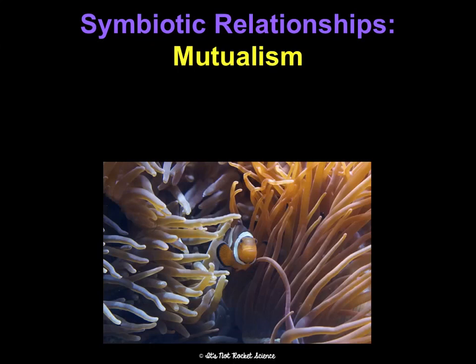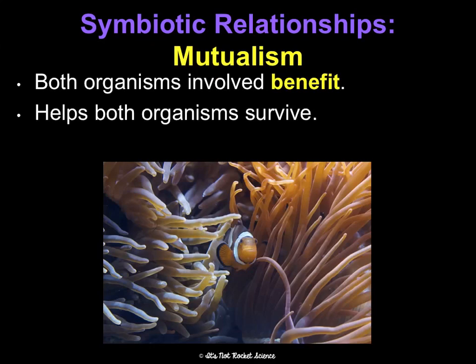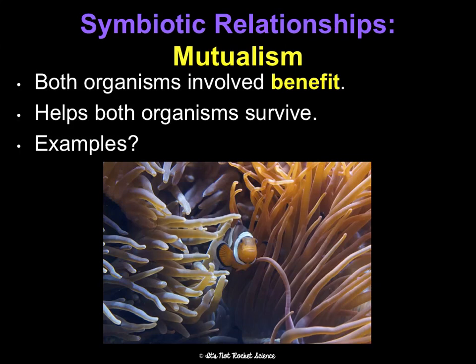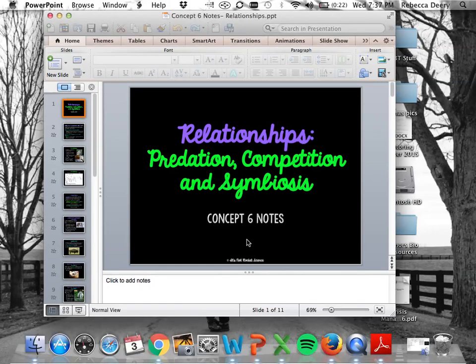Last — and honestly one of the most common — is mutualism, because it makes sense that it would be common: both organisms benefit. They're both helping each other survive, so both should be reproducing more and passing on this mutualistic relationship. An example is clownfish and anemones. The anemone provides a home and protection for the clownfish, while the clownfish bring in food and algae for the anemone and help clean it. They benefit each other, and that concludes relationships and ecological interactions.